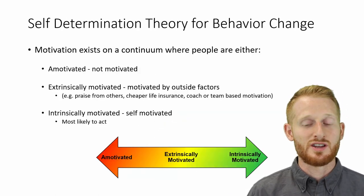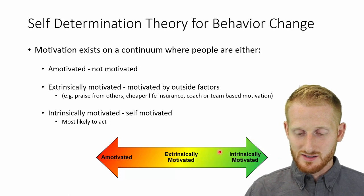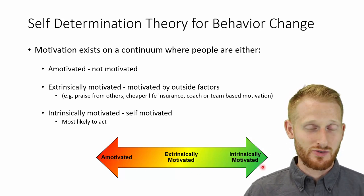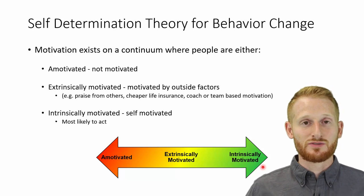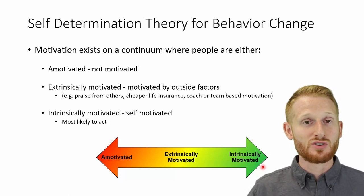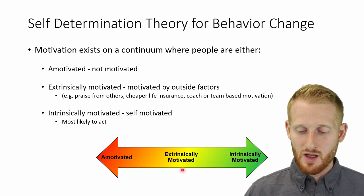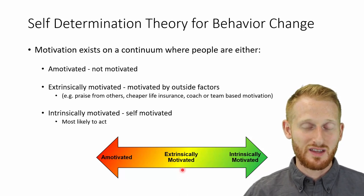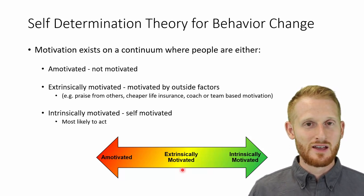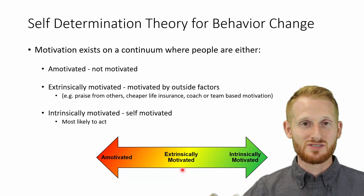The next theory is the self-determination theory for behavioral change, which is all about motivation. Everybody exists on a spectrum: amotivated on one end, meaning not motivated at all, through to intrinsically motivated on the other end — where they themselves see the value in the change and are pushing themselves toward it. In the middle is extrinsically motivated, where somebody else is telling them they need to change. If you tell someone who doesn't think they need to exercise that they should, you're trying to give them extrinsic motivation.